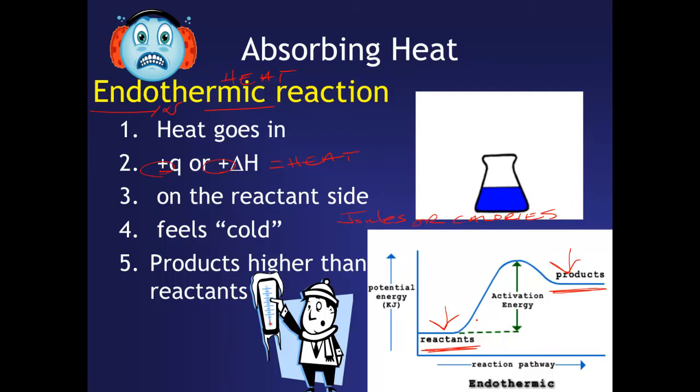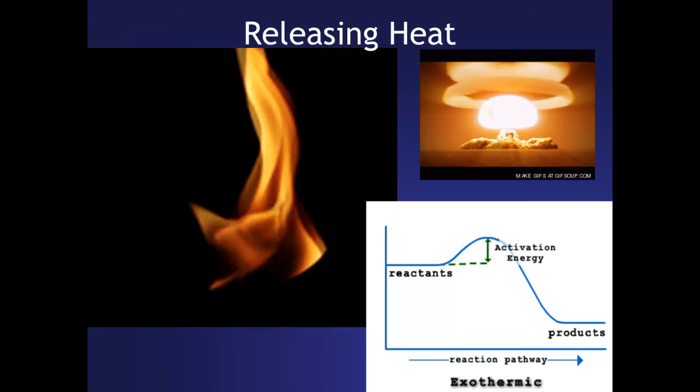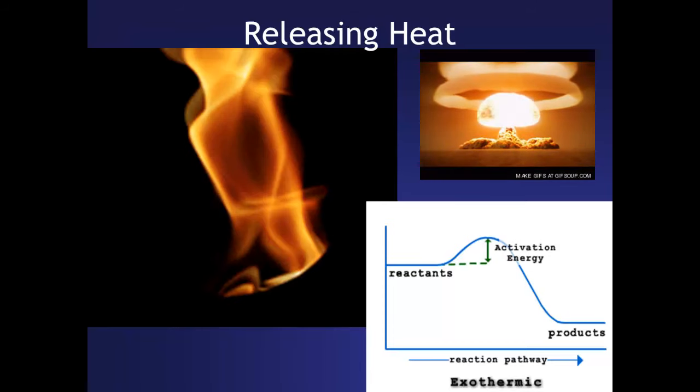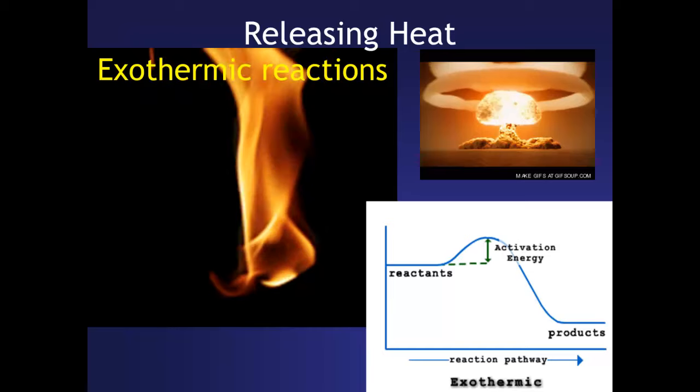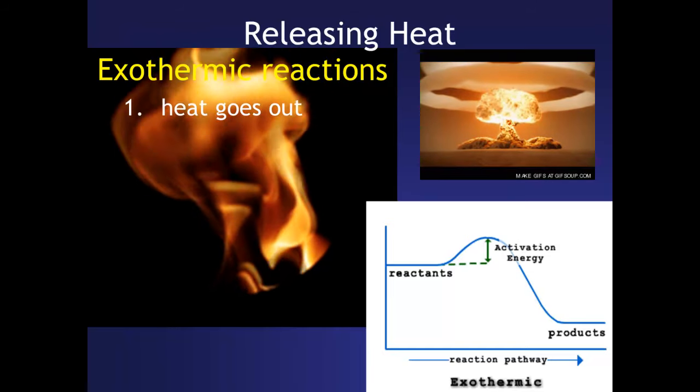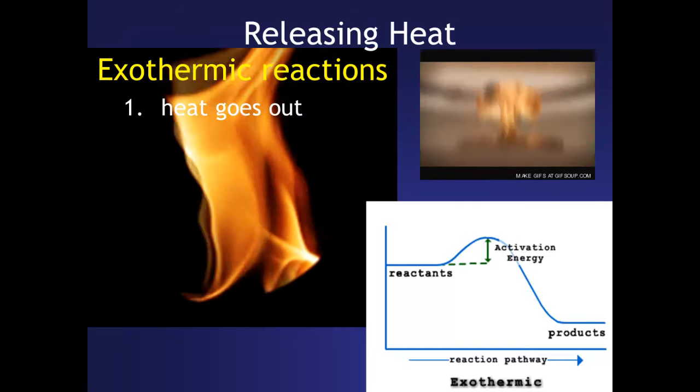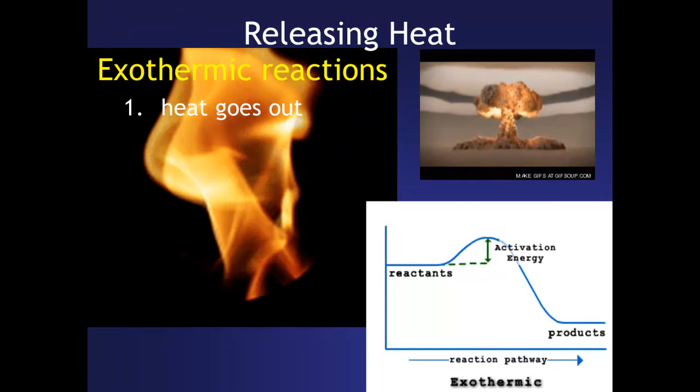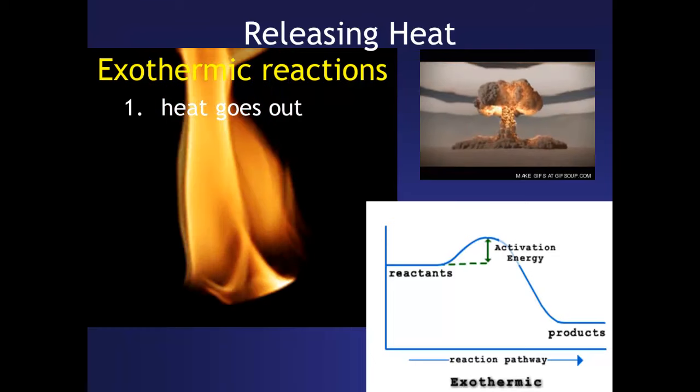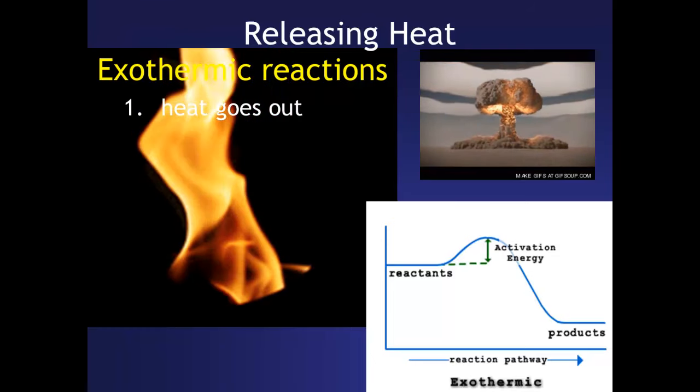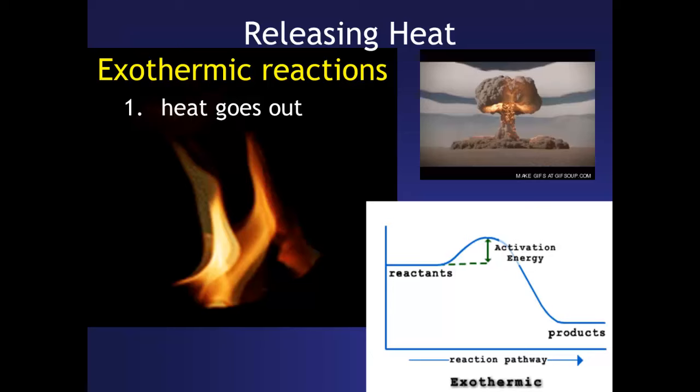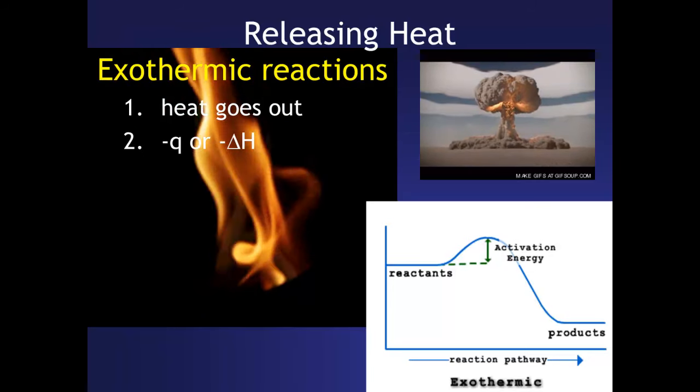For the other side, you can probably figure out the rest. So our next ones release heat. Those were absorbing heat. These will be our exothermic reactions. And instead of heat going in, this time heat will go out. And so since heat is leaving the system, like here in my flame or in my explosion, it's being absorbed by my hand and it's going to feel hot to us.